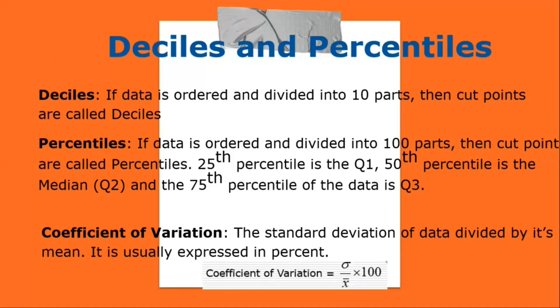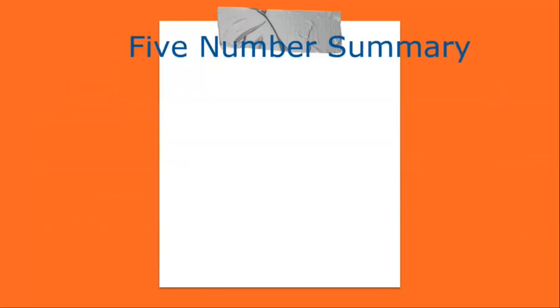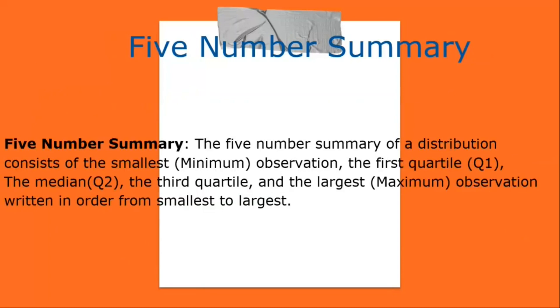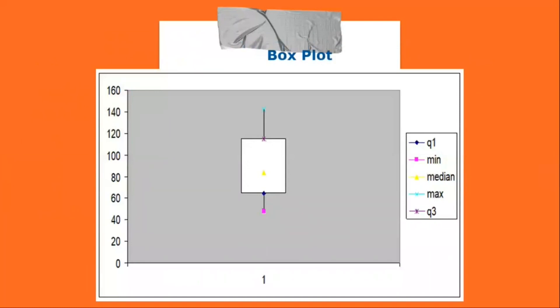The five-number summary of a distribution consists of the smallest (minimum) observation, the first quartile Q1, the median Q2, the third quartile Q3, and the largest (maximum) observation, written in order from smallest to largest. A box plot is a graph of the five-number summary: the central box spans the quartiles, a line within the box marks the median, and lines extending above and below the box mark the smallest and largest observations (the range). Outlying samples may be additionally plotted outside the range.